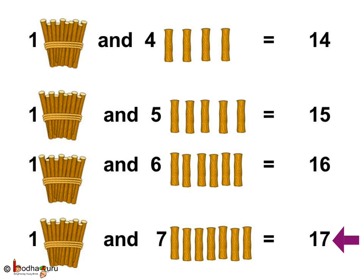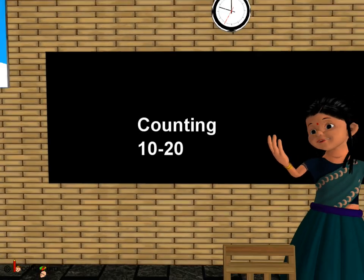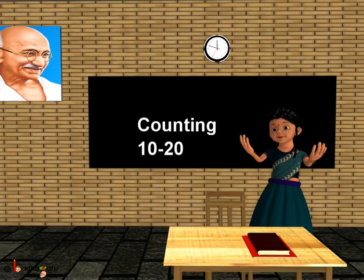1 ten and 7 is 17. 1 ten and 8 is 18. 1 ten and 9 is 19. 2 tens are 20. So, now you can count from 1 to 20. Great, isn't it? Bye bye children.